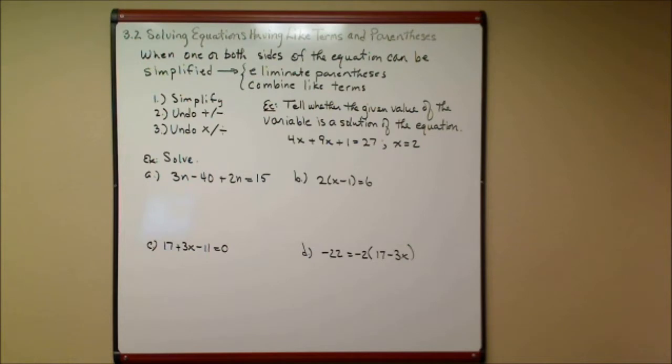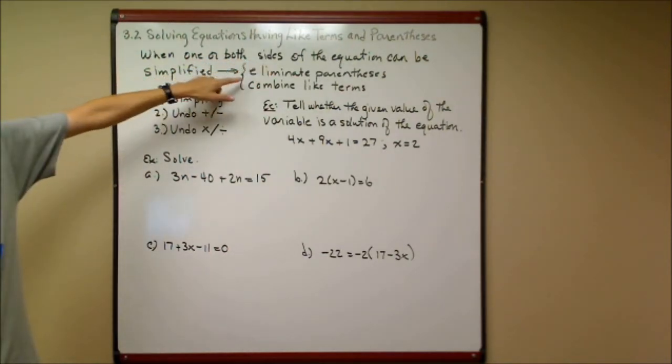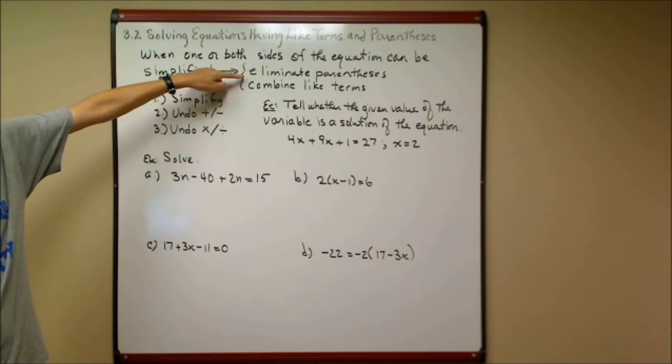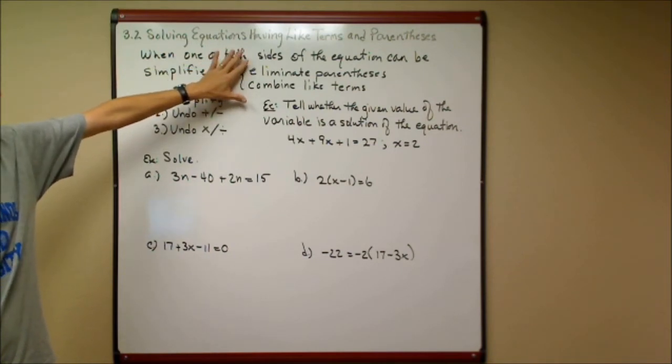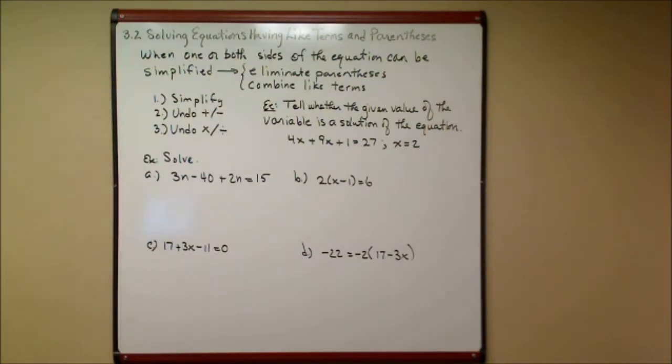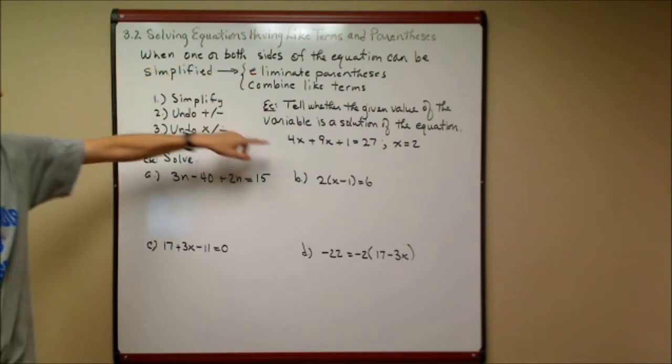When you have one or both sides of the equations that can be simplified, we simplify it like we do any kind of variable expression. We eliminate parentheses, and we combine like terms. Now, we've done this skill before in previous assignments where we were simplifying an expression, but now the expressions are going to be on one of the sides of the equation.